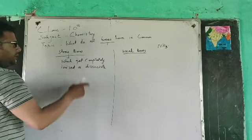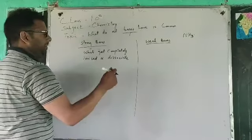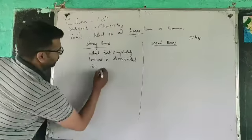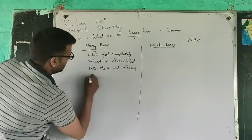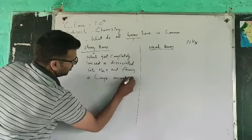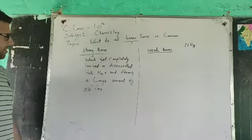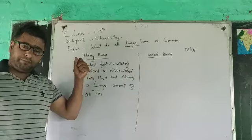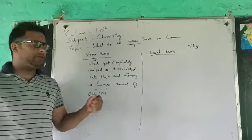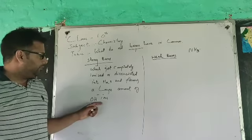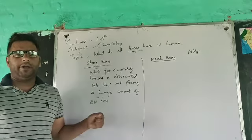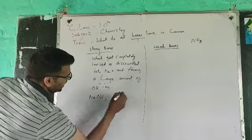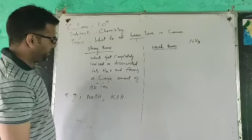What do we mean by dissociation here? A strong base gets dissociated — it gets broken down into its ions when dissolved in water — and produces a large amount of hydroxide ions. When a base gets completely ionized in water and forms a large amount of hydroxide ions, it is called a strong base. Examples include sodium hydroxide and potassium hydroxide.